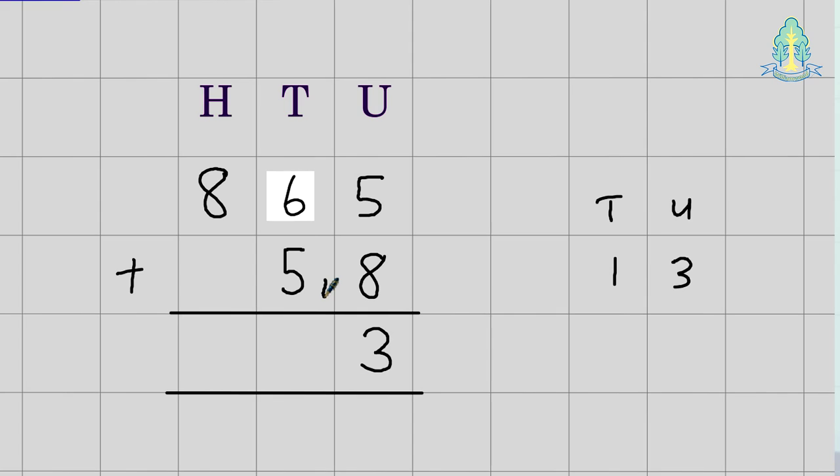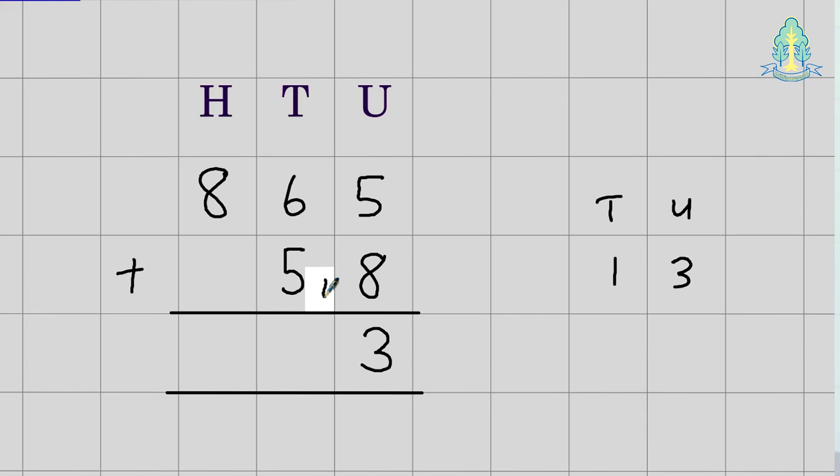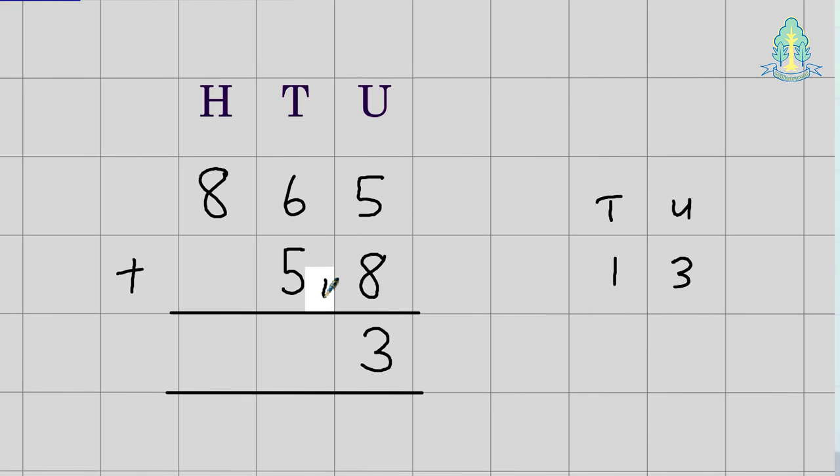Six plus five plus the one, that's the carrying digit, giving us twelve, again a two-digit number. So, we place the two in here, the one is the carrying digit above the line, and we can add eight, add one, to get nine in this case. Nine hundred and twenty-three for the final answer.